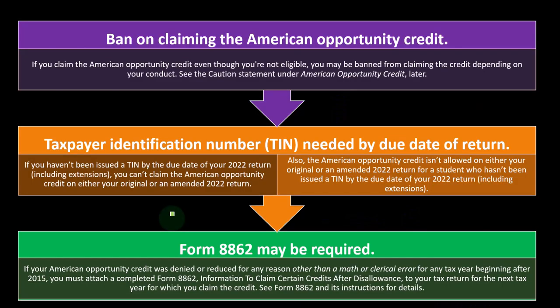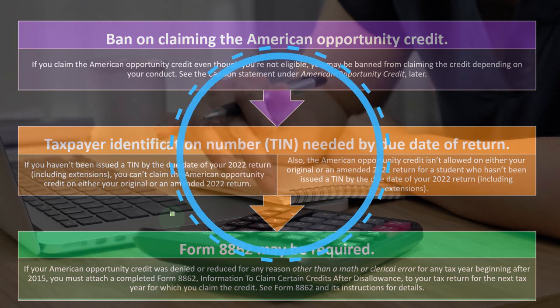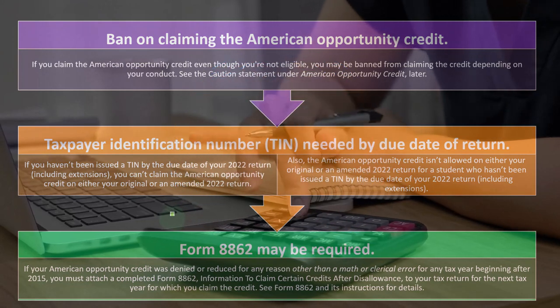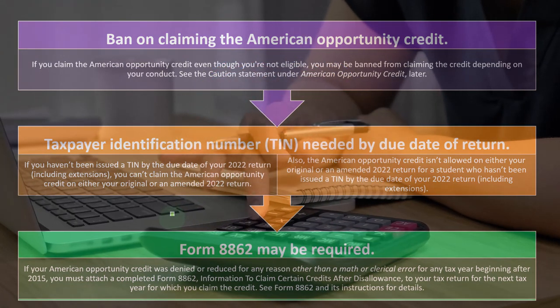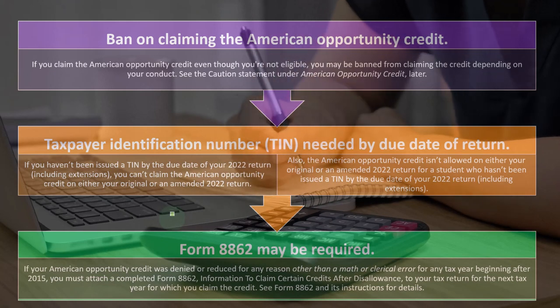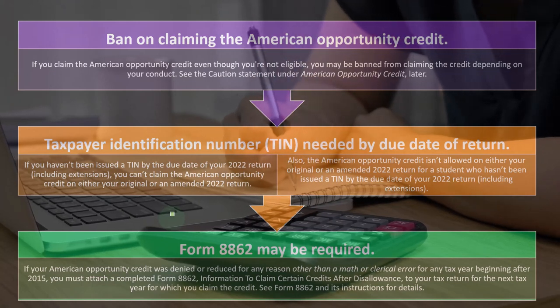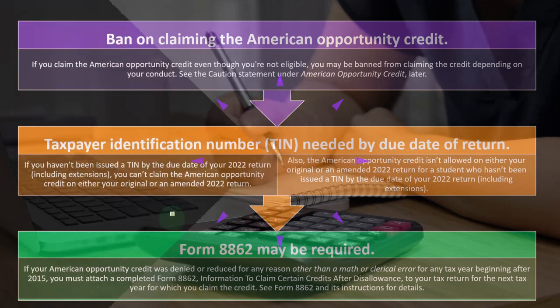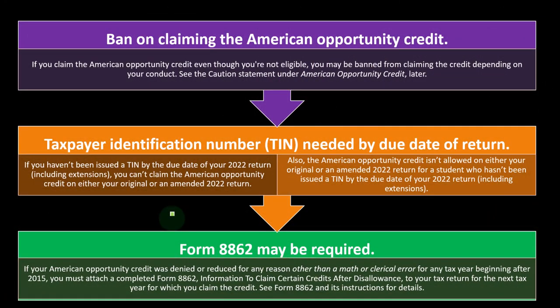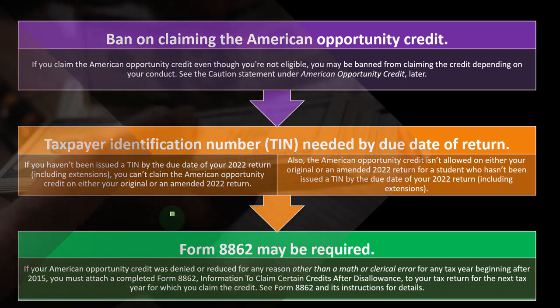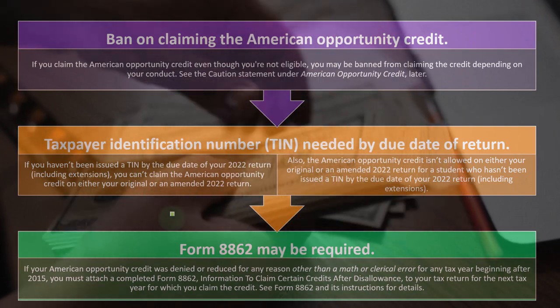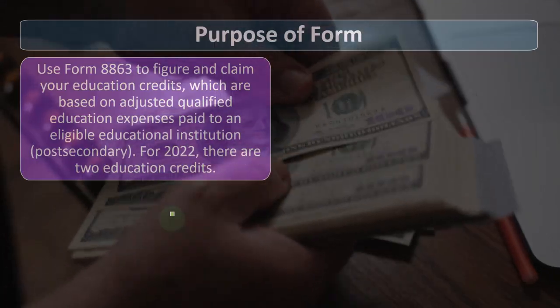Form 8862 may be required. If your American Opportunity Credit was denied or reduced for any reason other than a math or clerical error for any tax year beginning after 2015, you must attach a completed Form 8862 — Information to Claim Certain Credits After Disallowance — to your tax return for the next tax year for which you claim the credit. See Form 8862 and its instructions for details.